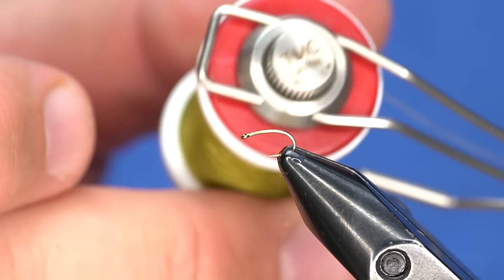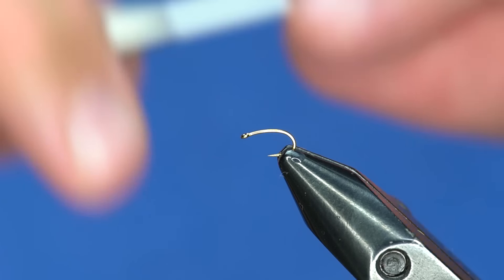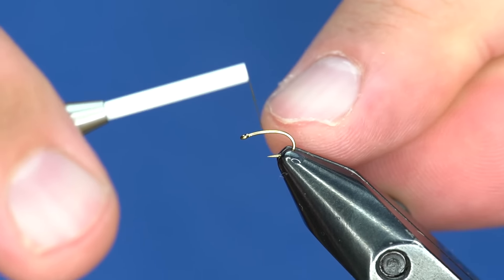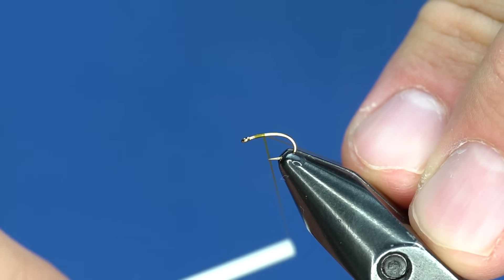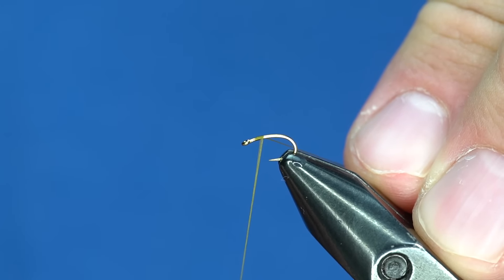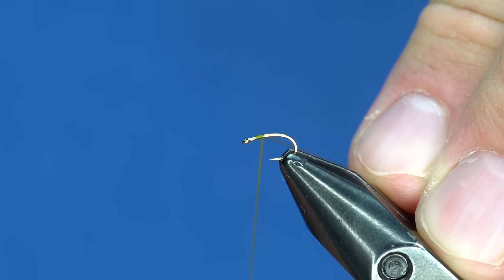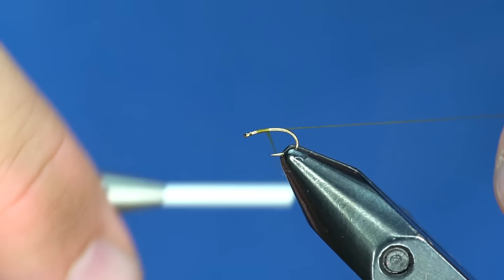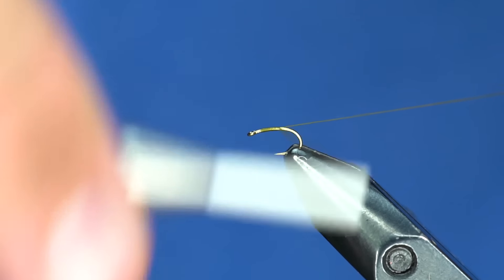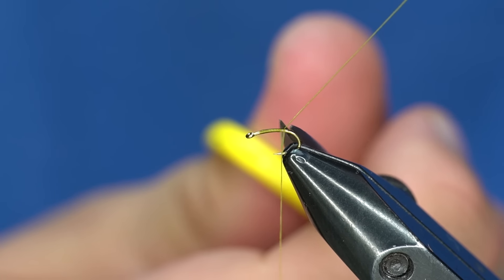You can see this fancy bobbin that I'm using. We're trying that out, doing some bobbin testing as well. To start this out, I'm going to make sure that my thread's nice and flat. You can see that sheen or the shine on that thread. It's nice and flat, and I want to keep it that way, basically for the duration of the fly. I'm going to wrap it back about halfway and then trim that off.